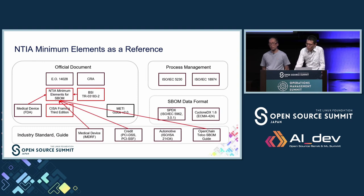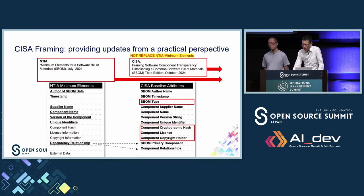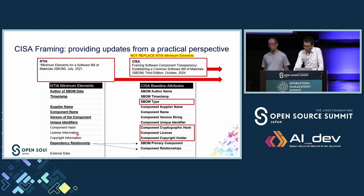If you look at documents referring to requirements for SBOM content, they almost all refer to the NTIA Minimum Elements. In this context, the CISA framing document is very important. Let's briefly look at the NTIA Minimum Elements and SBOM attributes in CISA's document. The CISA Framing third edition provides updates from a practical perspective, especially license compliance. CISA framing will not replace the NTIA Minimum Elements — CISA has authority to revise them but this framing document is not yet a replacement. Hashes and license/copyright information are recommended in NTIA, but are now required in the CISA framing document.